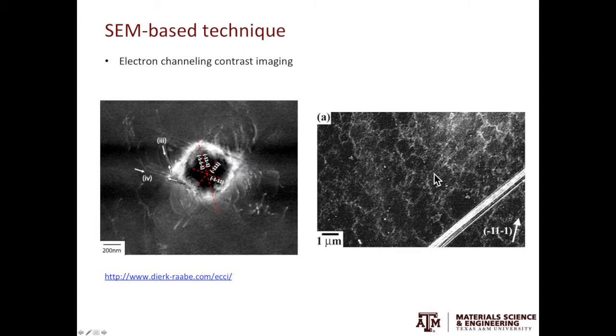Coming to TEM, you can either use the two-beam condition during the bright field imaging or the weak beam dark field condition to illuminate dislocations. In the two-beam bright field condition, dislocation lines appear to be dark in a bright background. For the weak beam dark field condition, dislocation lines appear to be bright in a dark background. The weak beam dark field condition gives better resolution when doing the dislocation imaging.